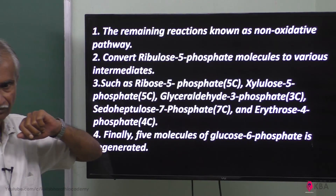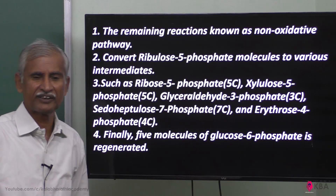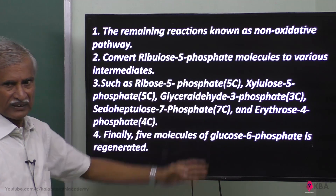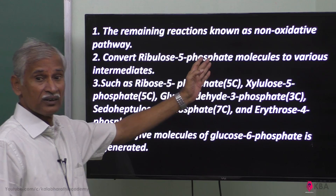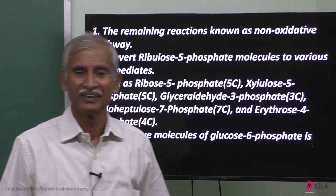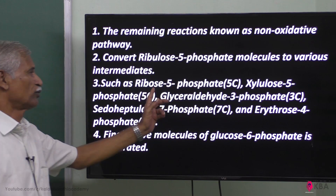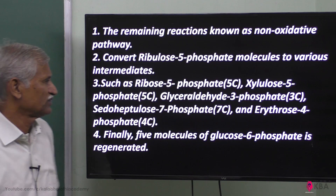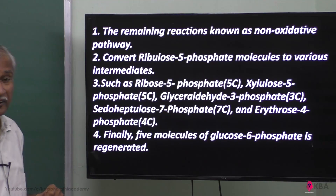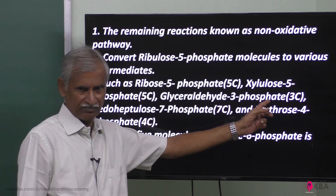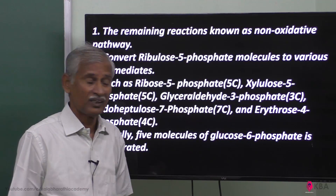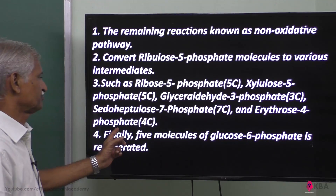The remaining reactions are non-oxidative. The ribulose 5-phosphate is converted into various intermediate molecules. The intermediates produced include: ribose 5-phosphate (5-carbon), xylose 5-phosphate (5-carbon), glyceraldehyde 3-phosphate (3-carbon), sedoheptulose 7-phosphate (7-carbon), and erythrose 4-phosphate (4-carbon).